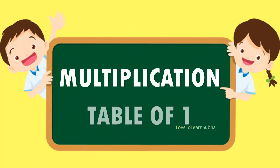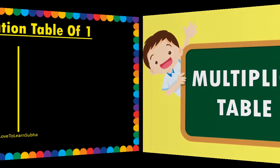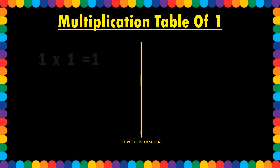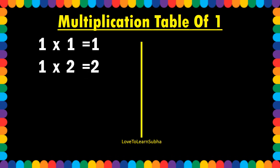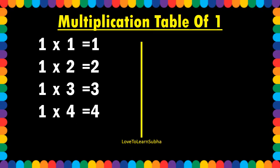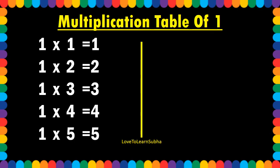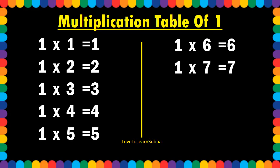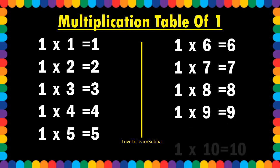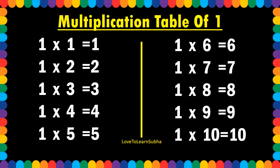Multiplication table of 1. 1 1s are 1, 1 2s are 2, 1 3s are 3, 1 4s are 4, 1 5s are 5, 1 6s are 6, 1 7s are 7, 1 8s are 8, 1 9s are 9, 1 10s are 10.